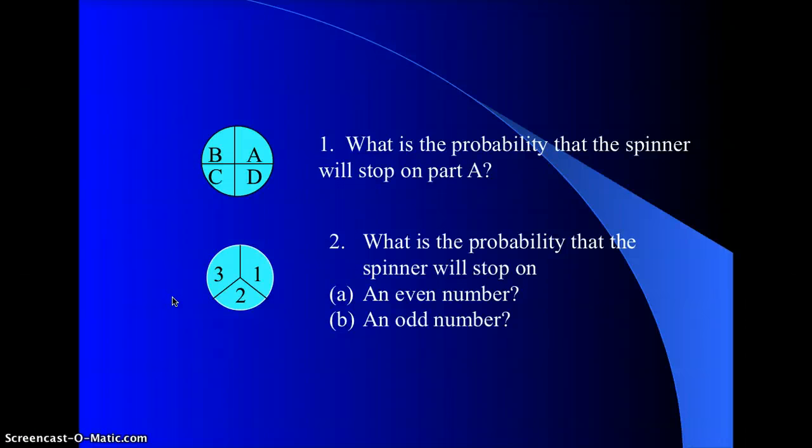On the first one, the probability that the spinner will stop on part A would be one out of four. So one-fourth of a chance that it will stop on A. The probability for the second one that it will land on an even number would be one out of three, because there's three total places for it to land and only one of them is even. The probability for it to stop on an odd number would be two out of three, two-thirds of a chance, because two of them are odd and there's a total of three spots that it could land on.